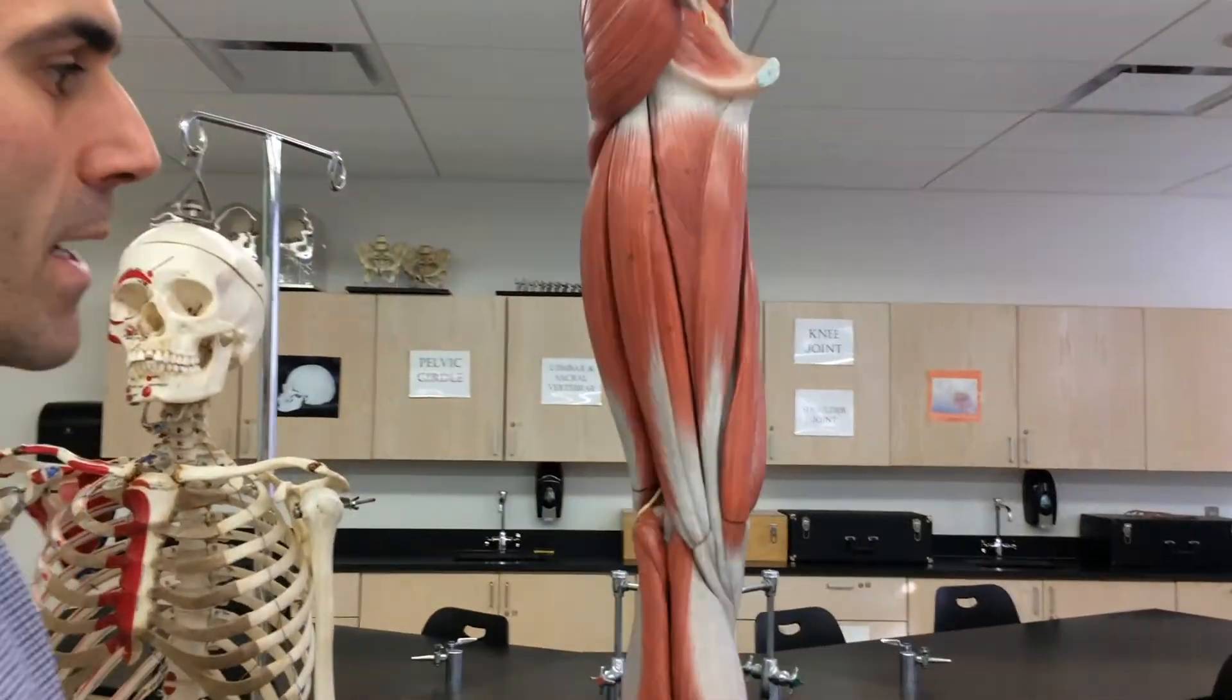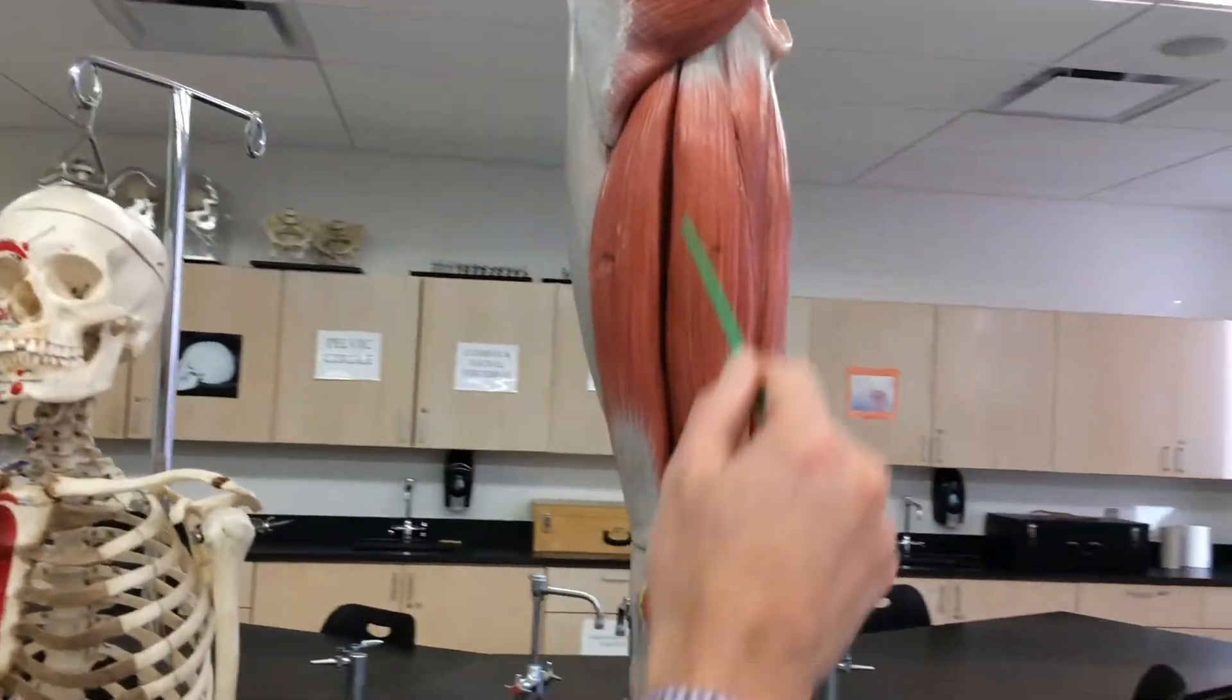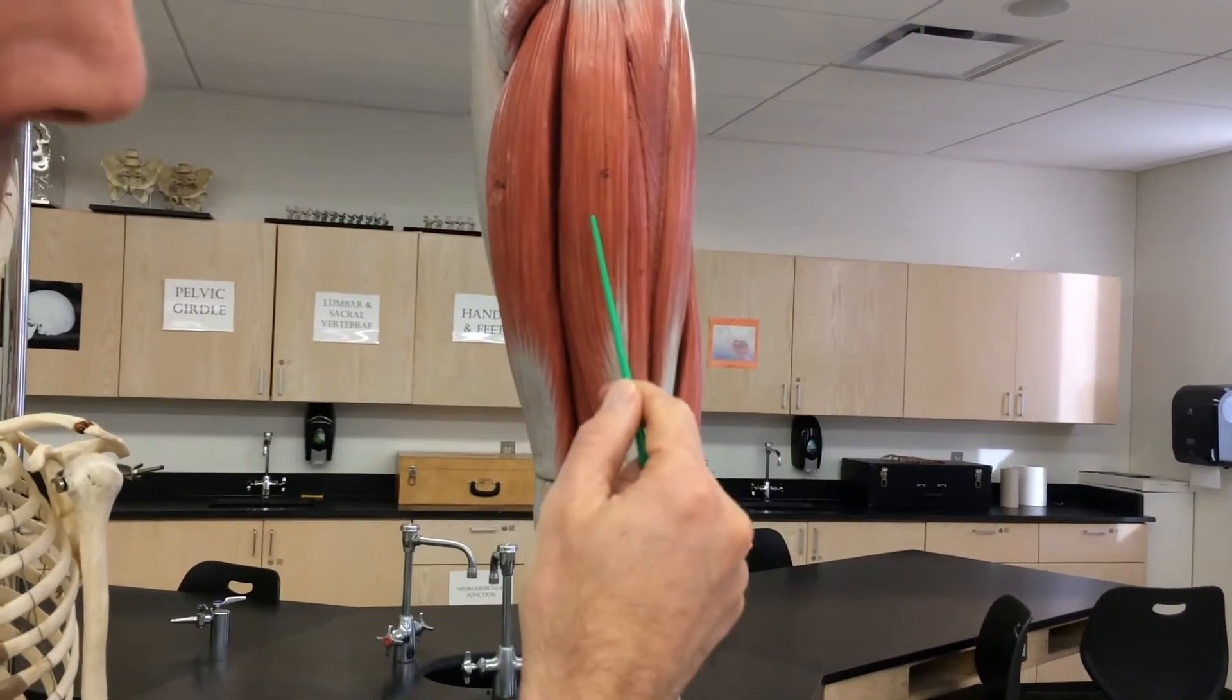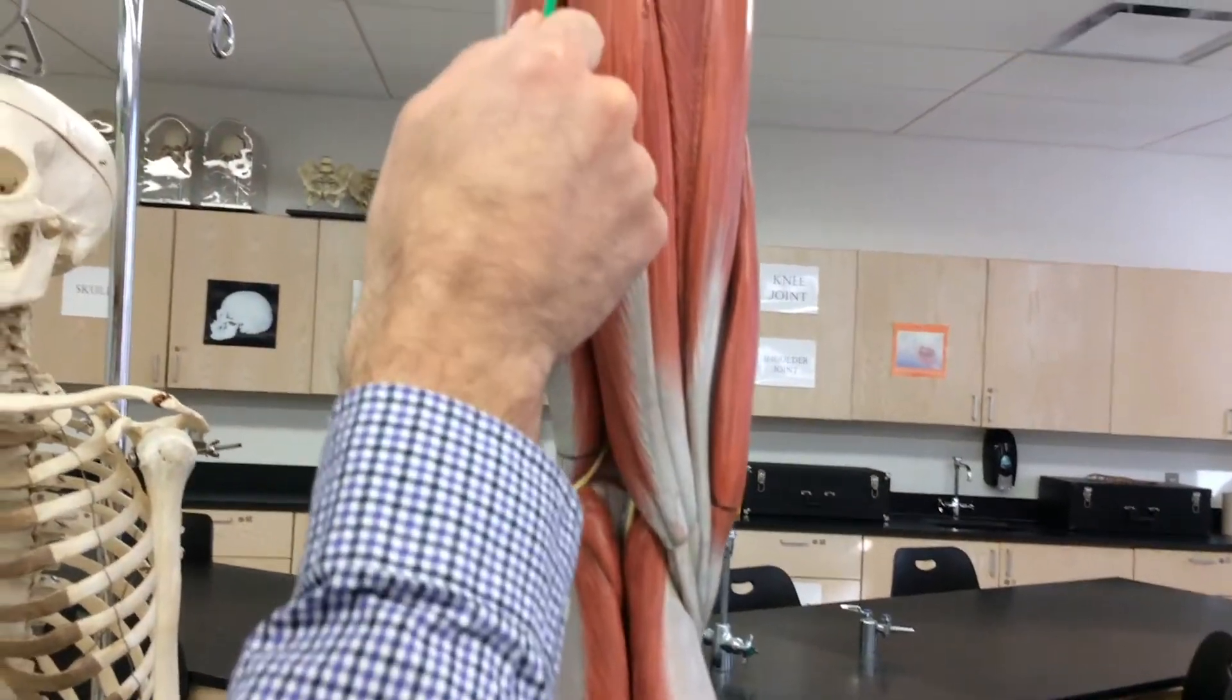The other muscle we have on the posterior side are the hamstrings. The biceps femoris, semitendinosus, semimembranosus. If you look here, you can see very nicely, our origin's going to be up here.